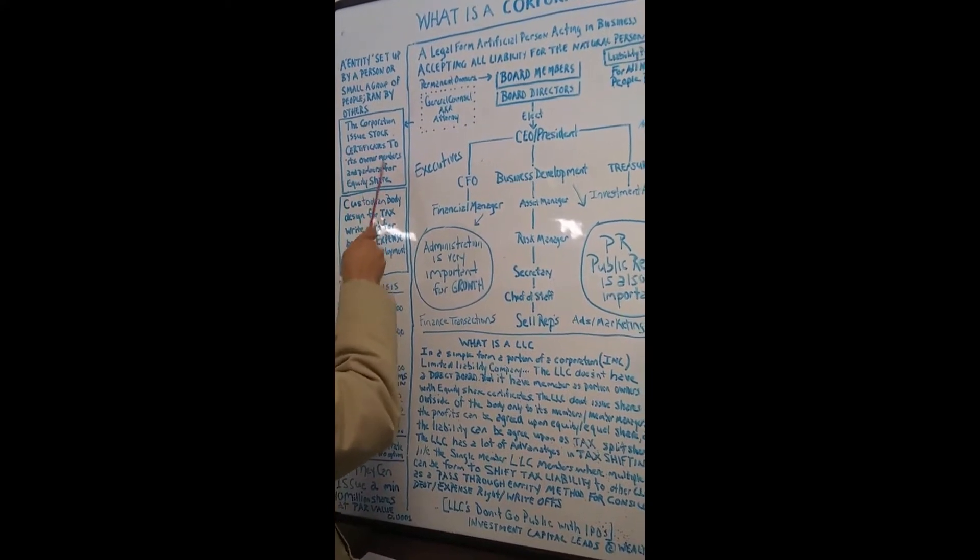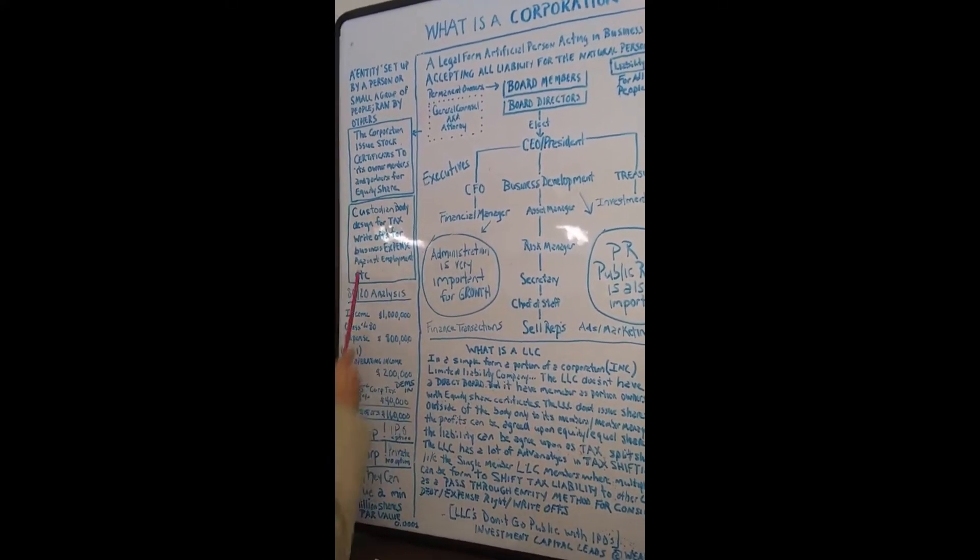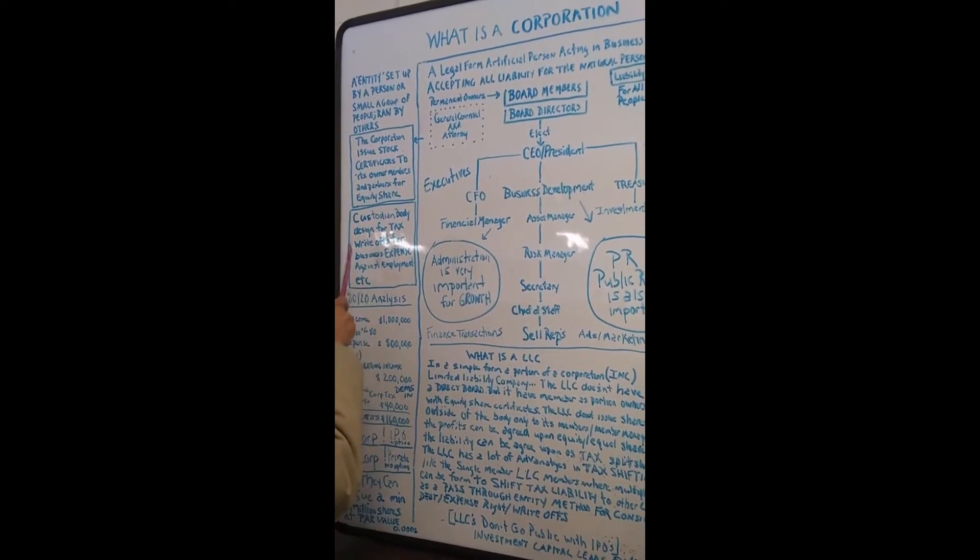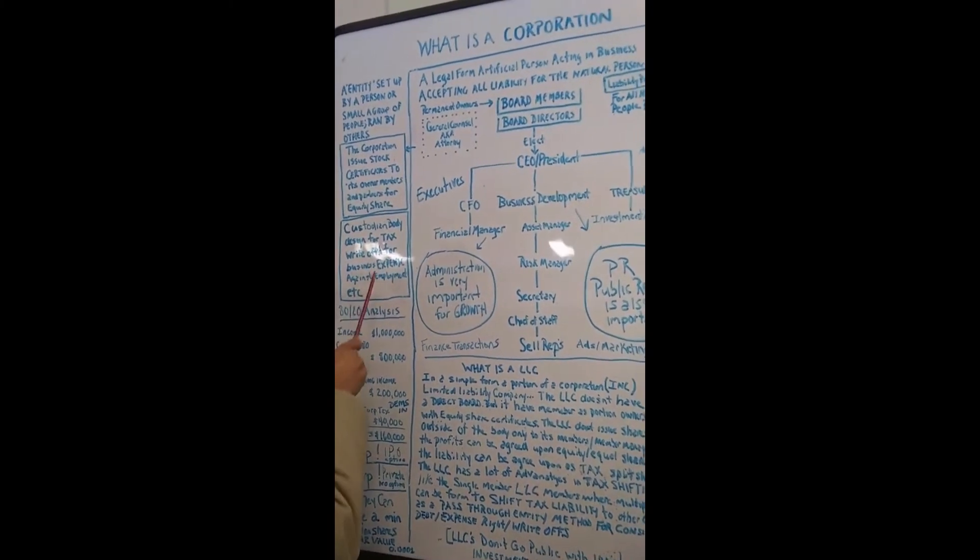The corporation is stock to its own amendment and partners for payment and share. A custodial body designed for tax write-offs for bidding and expense against the farm and settlement.